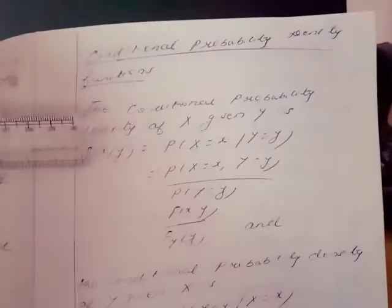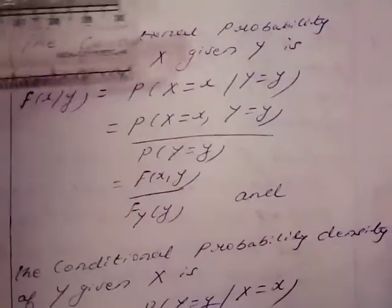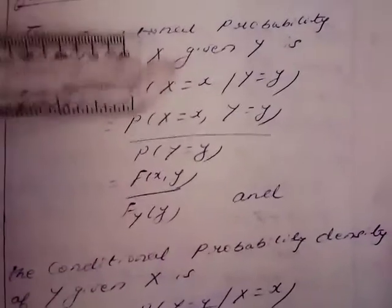Next definition: Conditional probability density functions. The conditional probability density of capital X given capital Y is f(x|y) = P(X = x | Y = y) = P(X = x, Y = y) / P(Y = y). The numerator can be written as f(x,y) and the denominator as f_Y(y), giving f(x,y) / f_Y(y).